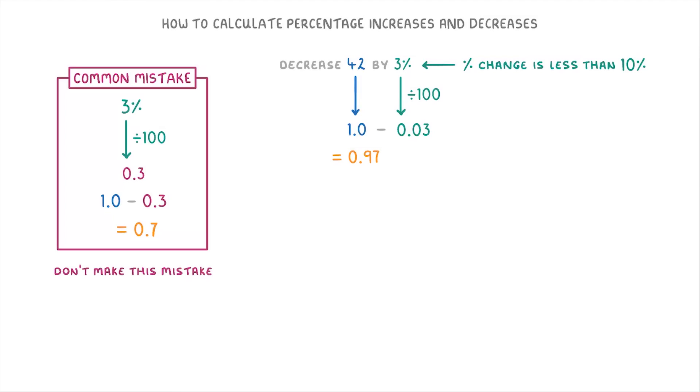So to find the actual answer here, we'd just do 42 times 0.97, which equals 40.74.